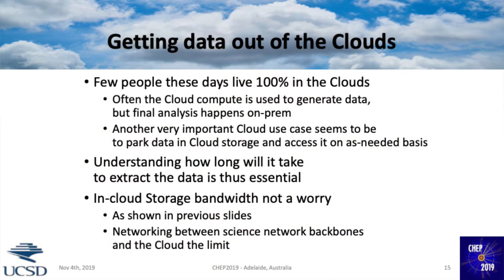Now let's see what happens when you leave the cloud and go toward the scientific networks, starting with getting data out of the cloud. Virtually nobody spends 100% of their time in the clouds. You may want to generate data in the cloud but then get it out so you can analyze it — often done on-prem — or you park the data in the cloud because they have really good storage and get it out on a needed basis. In both cases, understanding how long it will take to get the data out is very important. Cloud storage bandwidth is not a worry, so the limit is really in the interface between the cloud and your network provider.